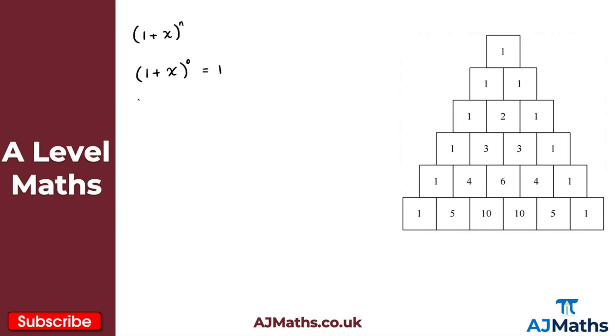For the next row then, this is when the power of n here is equal to one. So we get one plus x to the power of one, and what I get here then is one plus x. So what this does is this gives us the coefficient, so I get one plus x.